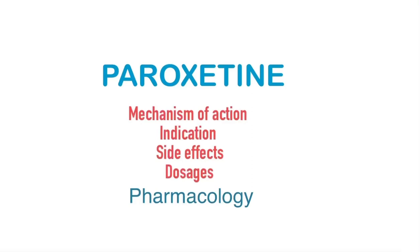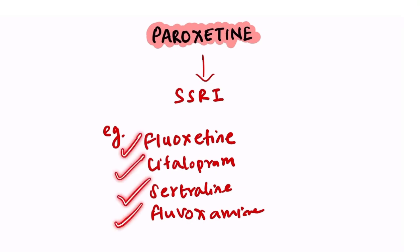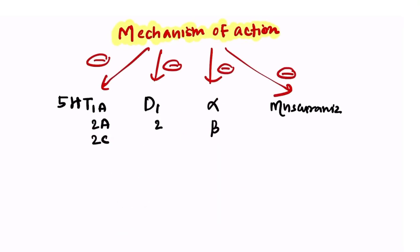Hello guys, in this video we are going to study about paroxetine. Paroxetine belongs to the SSRI group of drugs, that is selective serotonin reuptake inhibitor. The other examples in this group are fluoxetine, citalopram, sertraline, and fluvoxamine.